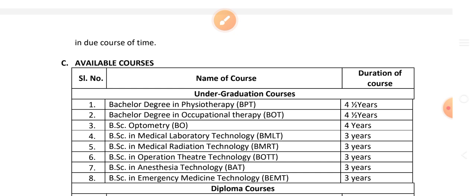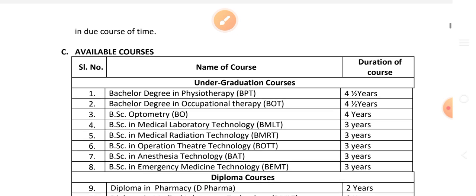Undergraduate courses include: Bachelor of Physiotherapy, BPT; Bachelor of Occupational Therapy, BOT — 4.5 years; B.Sc. Optometry; B.Sc. Medical Laboratory Technology, BMLT — 3 years; B.Sc. Medical Radiation Technology, BMRT — 3 years; and B.Sc. Operation Theater Technology, BOT — 3 years.